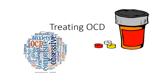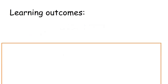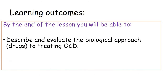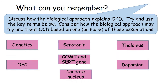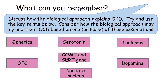So you're treating OCD — you're taking a biological approach here. We need to be able to describe and evaluate the biological approach, that is drug treatment for OCD. It's a good chance to have a recap of what you did last week. Have a little read through this, pause the video and see what you can remember about these key terms. Discuss how the biological approach explains OCD, try and use the key terms below. Consider how the biological approach may try and treat OCD based on one or more of these assumptions. Pause the video and see if you can recall a biological approach explanation for the instance of OCD.